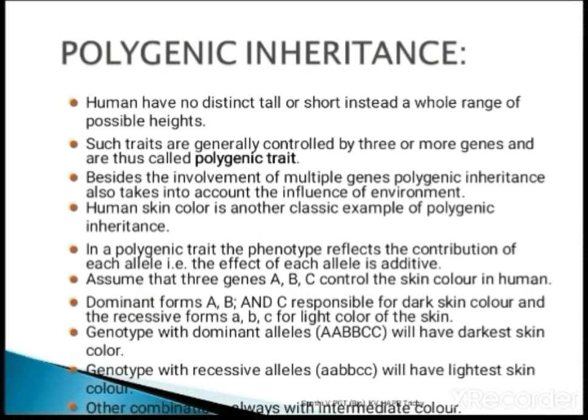Let us see in detail by taking the example of skin color. Skin color is controlled by three genes: capital A, capital B, capital C. When all are capital letters in double dose — AA, BB, CC — the people will have the darkest skin color.